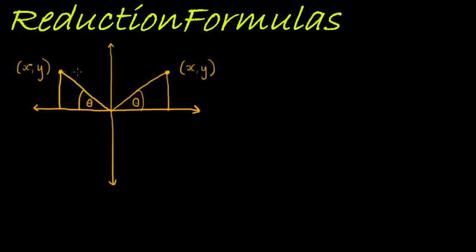They have the same height — both of them go up to h. That length is the same. The length from the origin to the point is the same. R is the same because it's x squared plus y squared; since x is negative, it will be positive when squared. So the square root of x squared plus y squared gives me r, and therefore they will be the same.